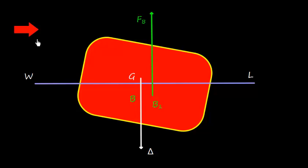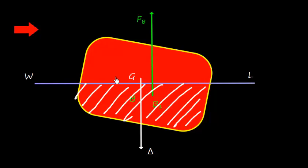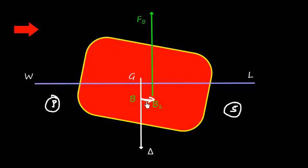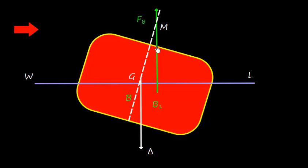When an external heel force acts — such as wind or waves — the vessel heels and the underwater volume increases on the heel side. As a result, the center of buoyancy shifts from B to B1 in that direction. For example, if the vessel heels to starboard, the underwater volume increases on the starboard side and B shifts accordingly. The force of buoyancy, which was initially aligned with the center of gravity, is now separated from it.